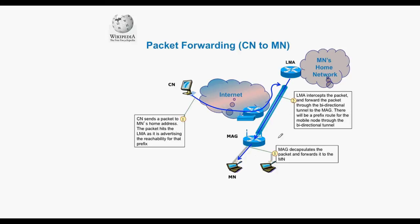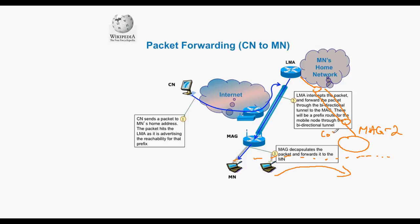If the mobile node changes the mobile access gateway — for example, moving from MAG 1 to MAG 2 — a new bidirectional tunnel is created, and the correspondent node can still send packets to the same address. The LMA handles the handoff that has occurred. Both the mobile node and the correspondent node are unaware of the change in the care-of address; the correspondent node keeps sending packets to the LMA, and the LMA forwards them to the correct mobile access gateway.